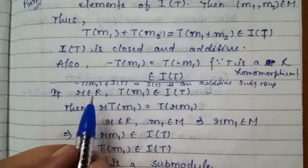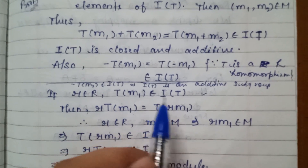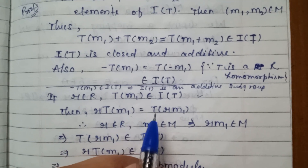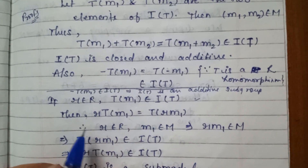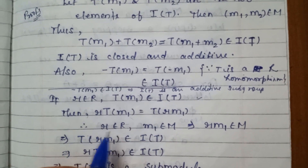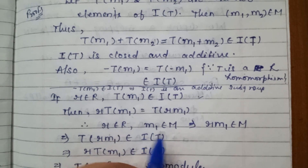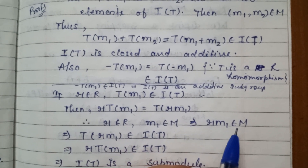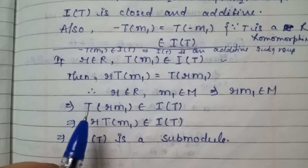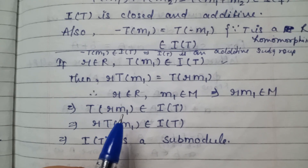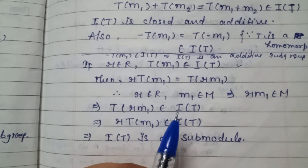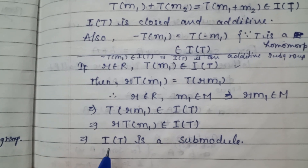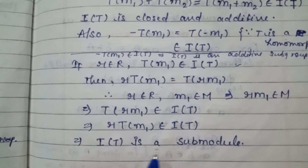If r belongs to R and T(m1) belongs to Im(T), then r·T(m1) = T(r·m1), where r belongs to R and m1 belongs to M. So r·m1 belongs to M, which implies T(r·m1) belongs to Im(T). Therefore r·T(m1) belongs to Im(T), and Im(T) is a submodule.